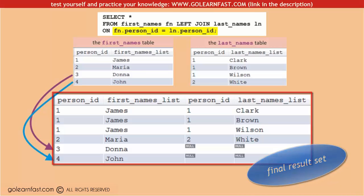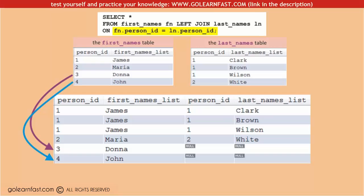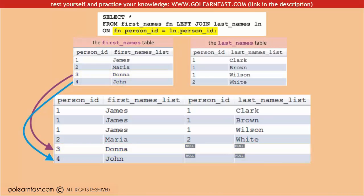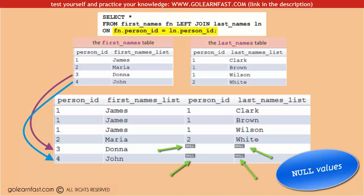As you can see, the result set includes also all the unmatched rows from the left table. Note that when a row with unmatched columns is retrieved, any columns from the other table are given null values. As you can see, Donna and John don't have a corresponding last name in the last names table, that's why null values are returned for them.